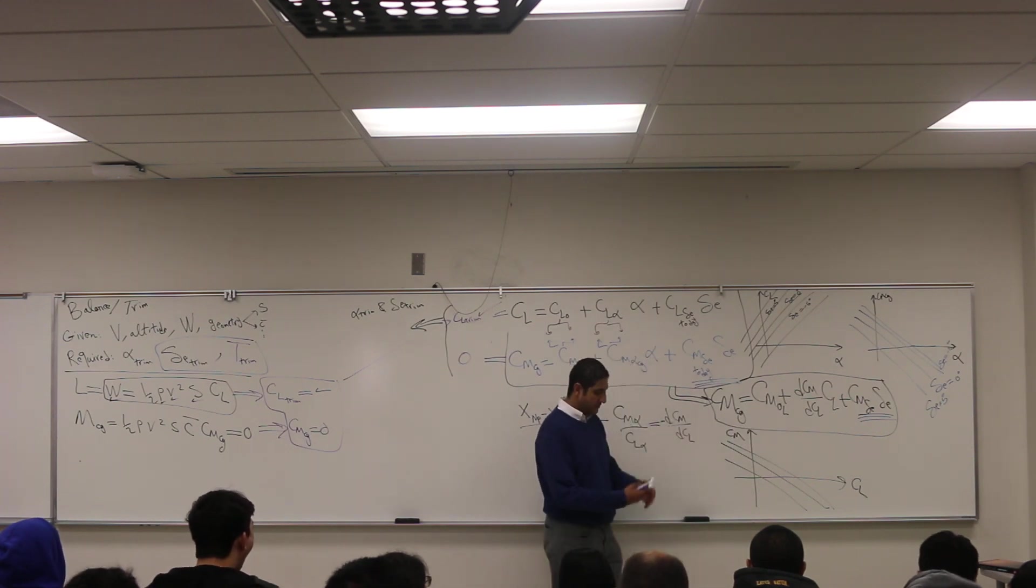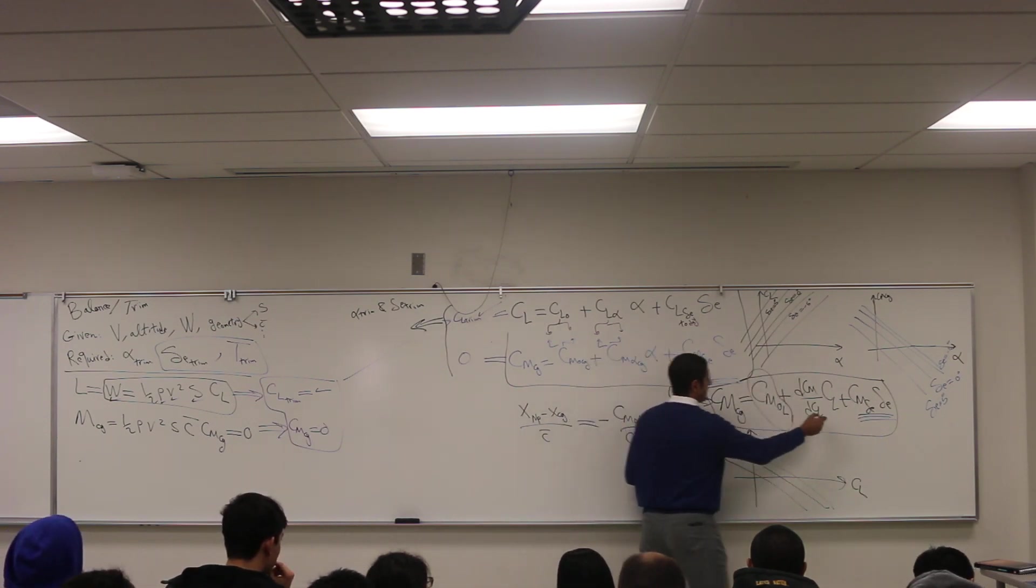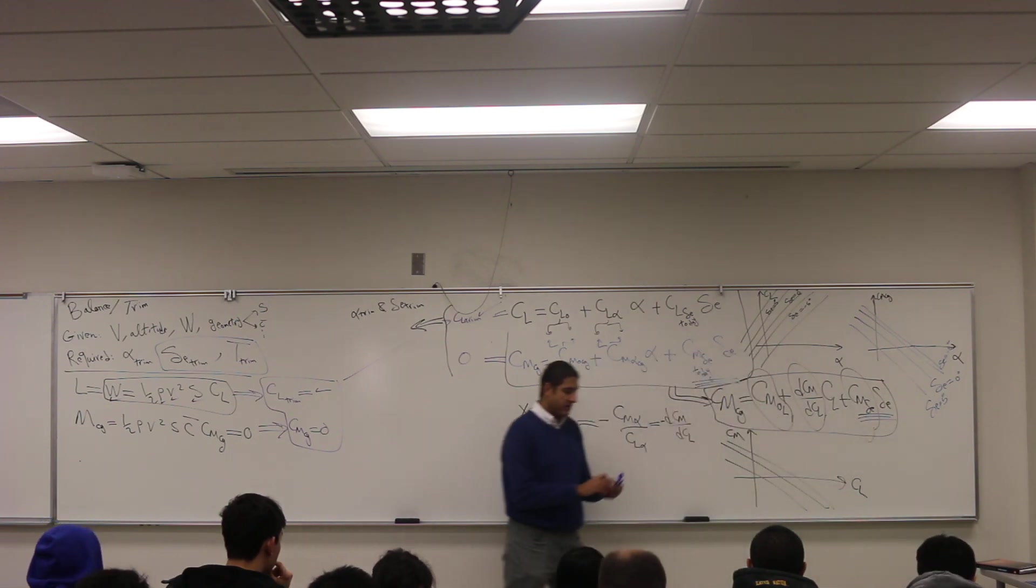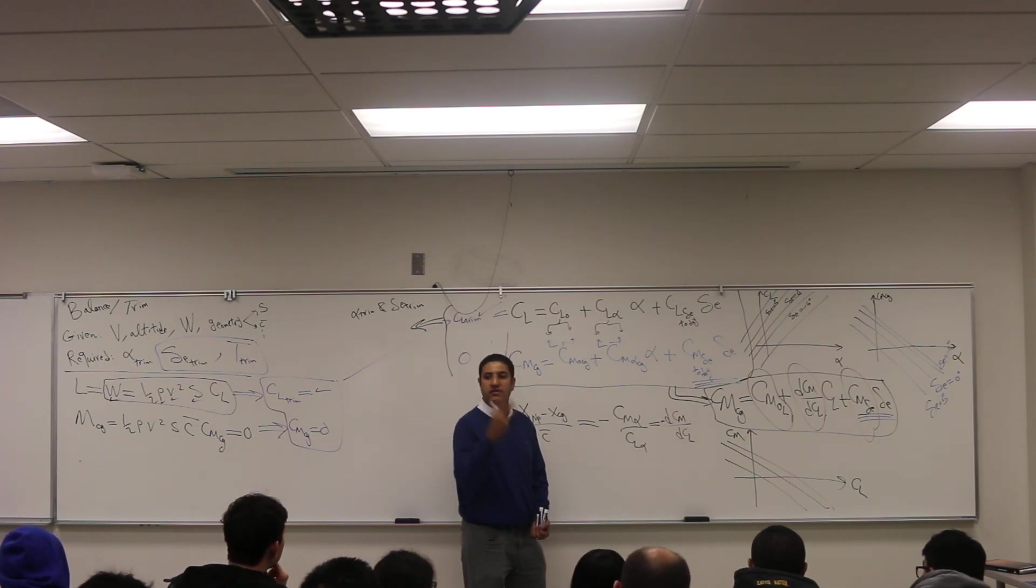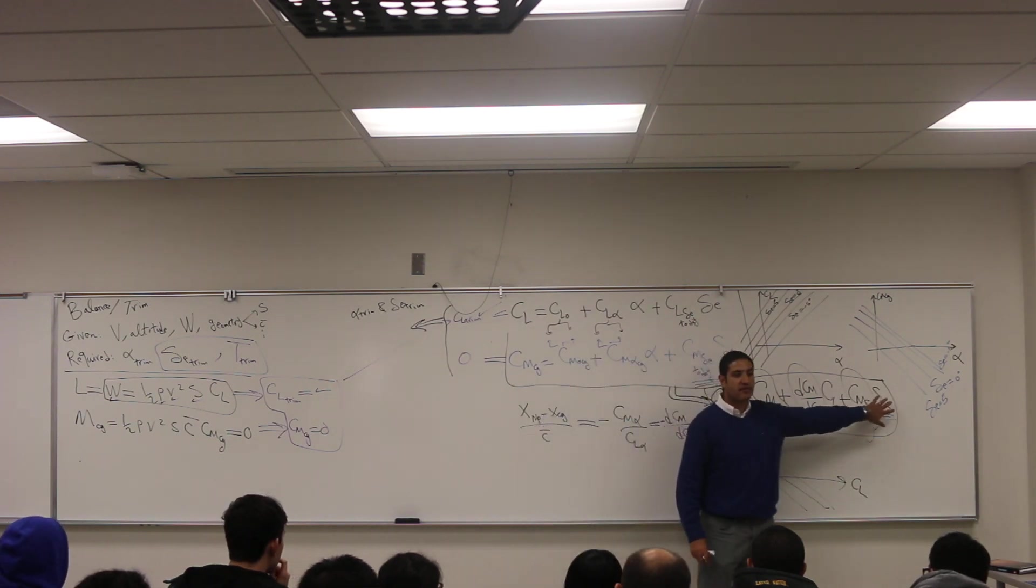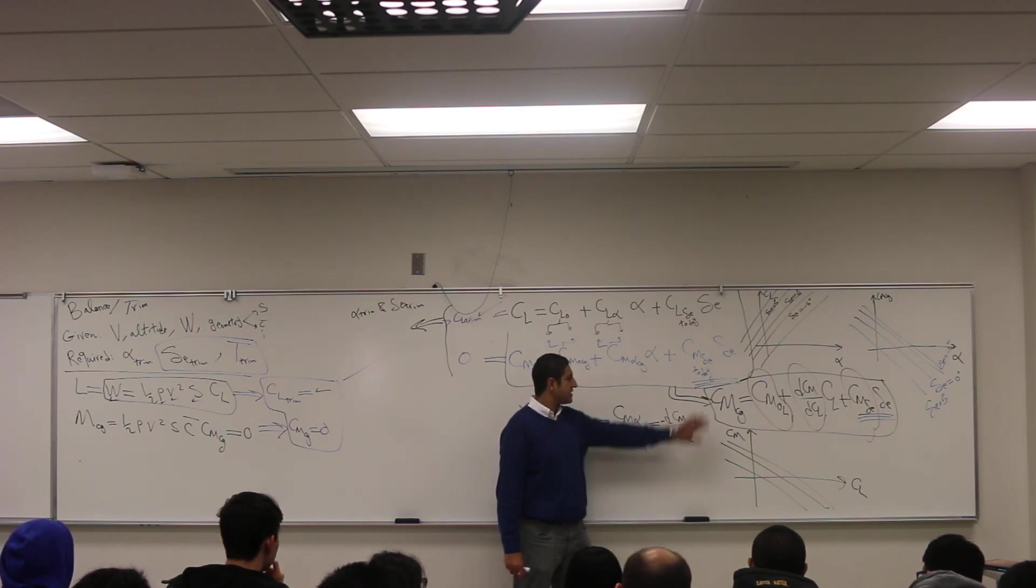Because again, these are aerodynamic characteristics, they are given in the problem. These brown things are given. So this equation is just a single equation having three variables: CM, CL, and delta elevator. At balance, CM is what? Zero.